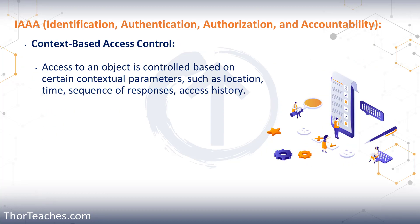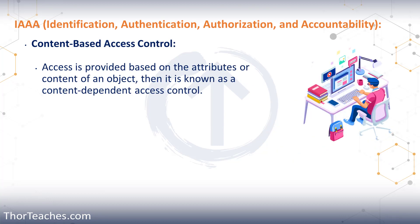As the last part of authorization, let's look at context and content-based access control. With context-based access control, you get access based on contextual parameters such as your location, time, sequence of responses, or access history. For example, if I log in from my home PC with a whitelisted IP during working hours, I get access to the corporate network. But if I log in at 3 in the morning from an IP in an entirely different country, I would not get access — because access is granted based on context.